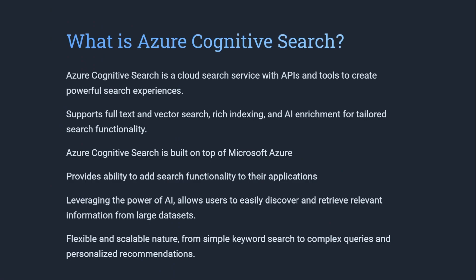What is Azure Cognitive Search? Azure Cognitive Search is rebranded from Azure Search and it's basically used as a cloud search service provided by Microsoft. It supports full text and vector search. It has rich indexing and this also gives you an ability to add search to any application — it can be an Android application, Windows application, or your web.